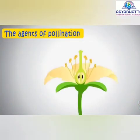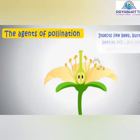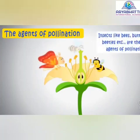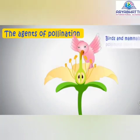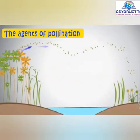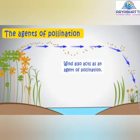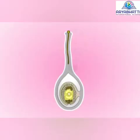Now we will learn about the different agents of pollination. Insects like bees, butterflies, and beetles are the main agents of pollination. Birds and mammals also pollinate some flowers. Wind also acts as an agent of pollination.